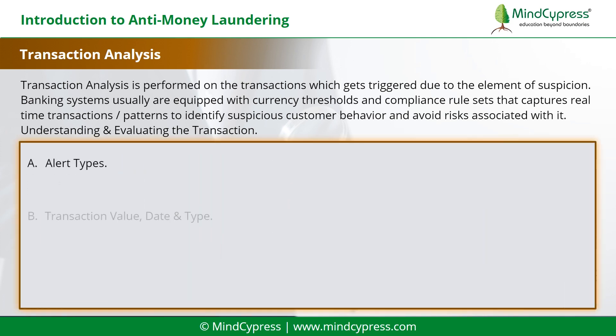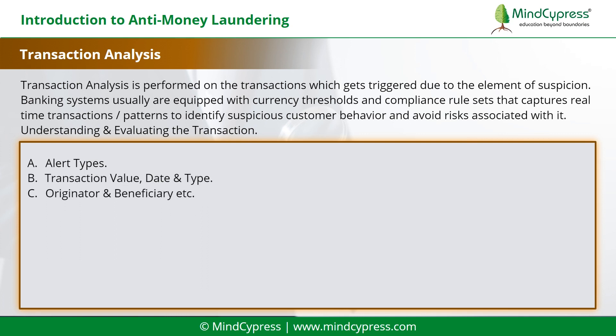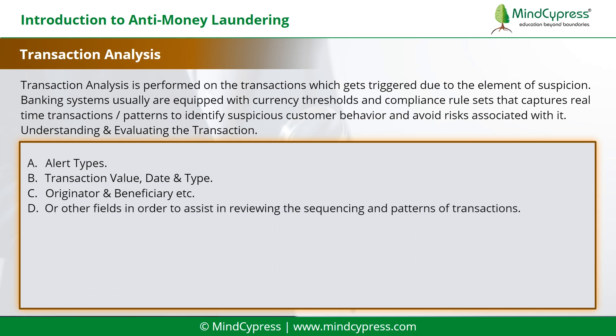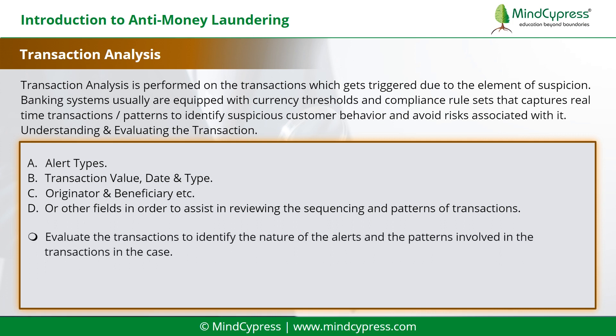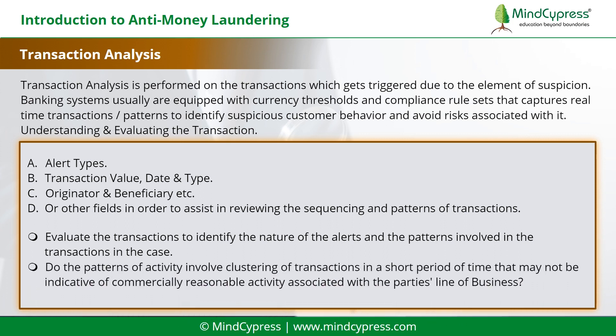These attributes include: A) alert types; B) transaction value, date and type; C) originator and beneficiary, etc.; D) other fields in order to assist in reviewing the sequencing and patterns of transactions. Evaluate the transactions to identify the nature of the alerts and the patterns involved in the case — for example, do the patterns involve clustering of transactions in a short period of time that may not be indicative of commercially reasonable activity associated with the party's line of business?